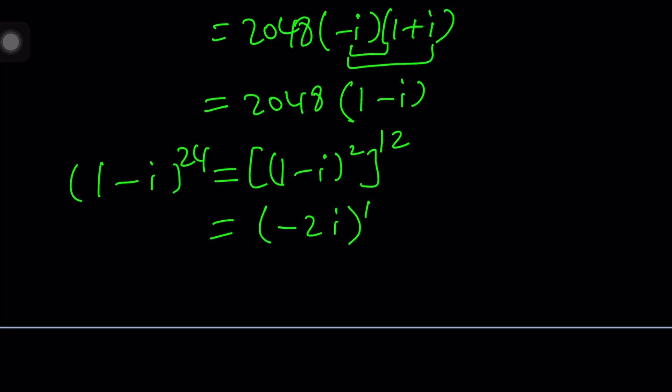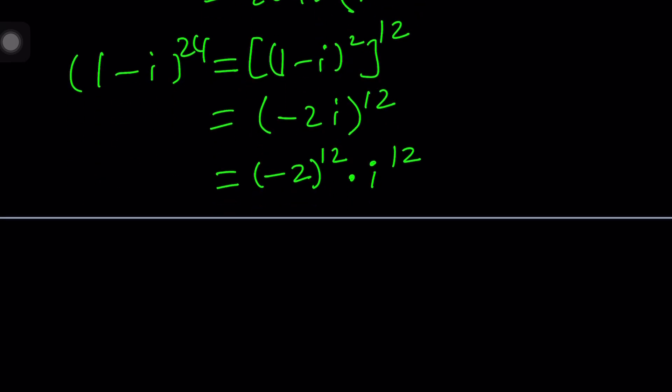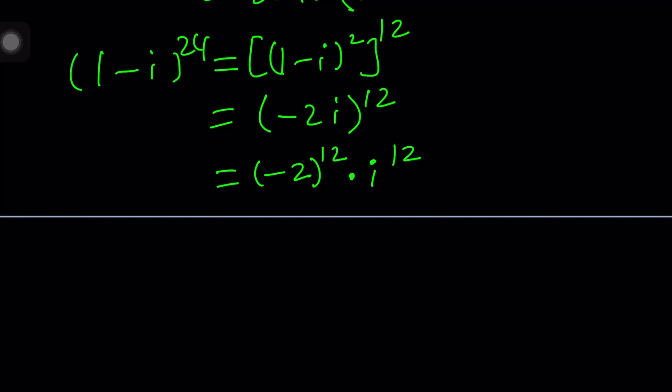As before, this is going to be negative 2 to the 12th power multiplied by i to the 12th power. But negative 2 to the 12th power is the same as 2 to the 12th power, because 12 is even. Even though the base is negative, even power will take care of that.